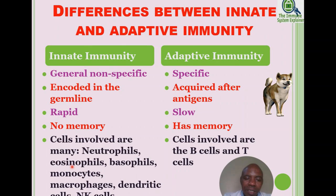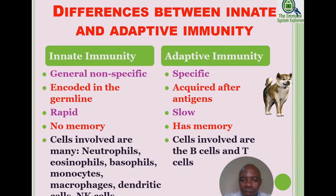The cells of innate immunity include neutrophils, eosinophils, and basophils — collectively called polymorphonuclear granulocytes — as well as monocytes, macrophages, dendritic cells, and natural killer cells. The cells of adaptive immunity include B cells (B lymphocytes) and T cells (T lymphocytes).